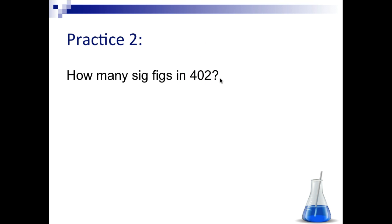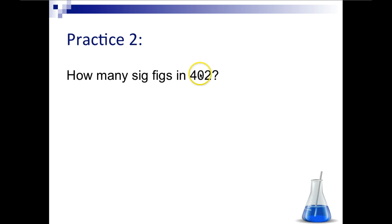How about this number? Pause the video and unpause when you're ready. This number has no decimals, no zeros in the front, and no zeros on the end. So all three digits, including the zero in between, are significant. We have three significant digits in this number.